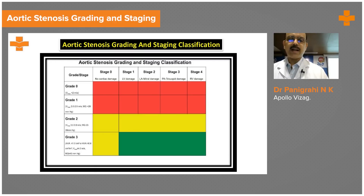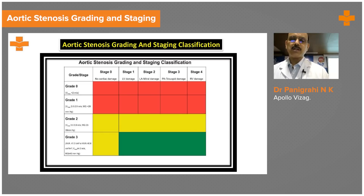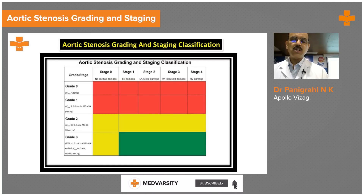Clinically, when the gradient is more than 64–70 mmHg in a symptomatic patient — stage one, two, or three — there is an indication to intervene with either SAVR (surgical aortic valve replacement) or TAVR, which is the percutaneous, non-surgical, transcatheter aortic valve replacement.